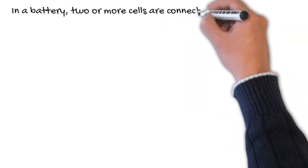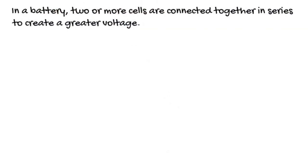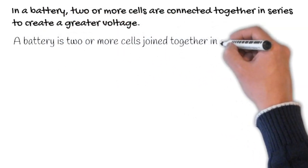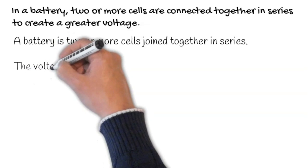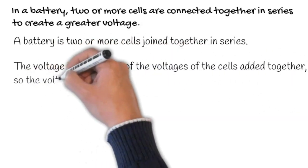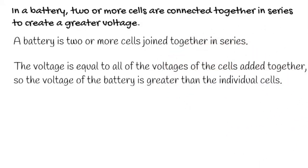In a battery, two or more cells are connected together in series to create a greater voltage. A battery is two or more cells joined together in series. The voltage is equal to all of the voltages of the cells added together, so the voltage of the battery is greater than the individual cells.